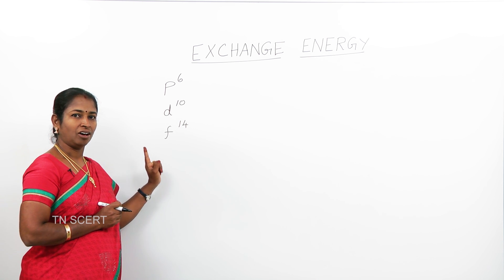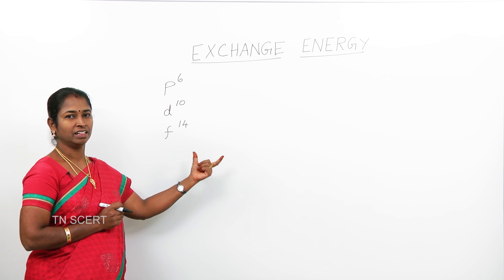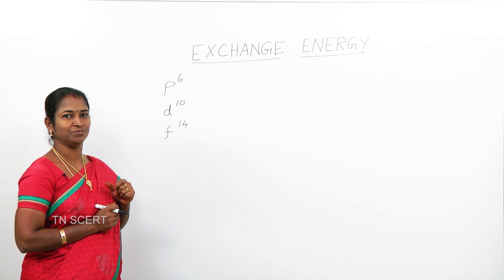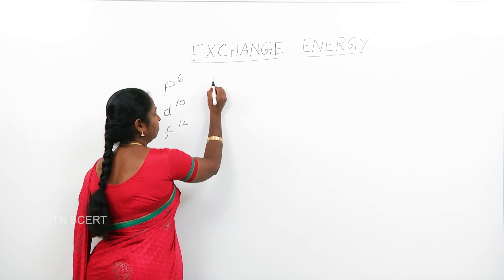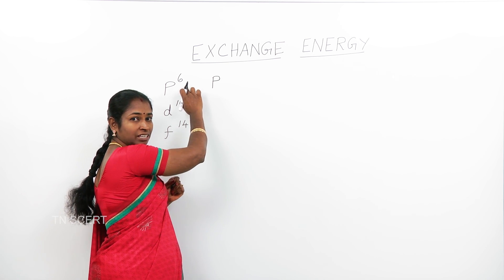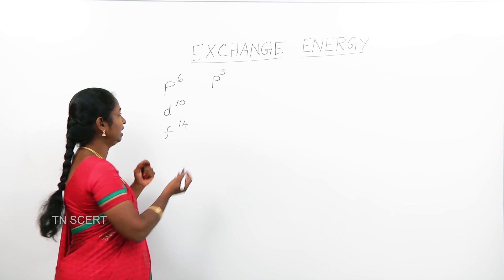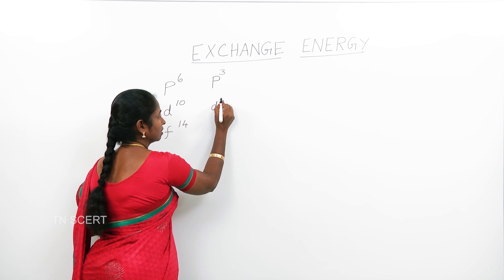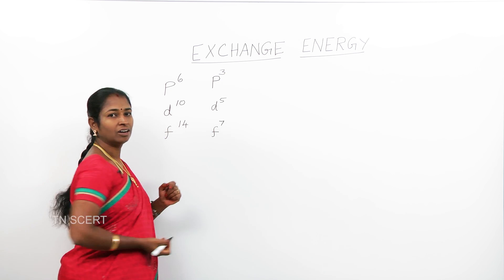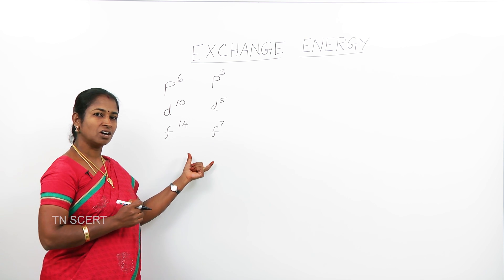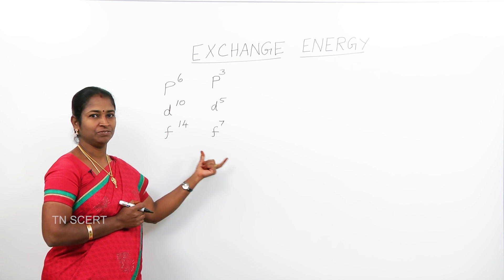You know that if a p orbital, d orbital, or f orbital is exactly half filled, it is more stable than partially filled orbitals. The half-filled configuration of p orbital is p3. Similarly, for d orbitals it is d5, and for f orbital it is f7. These half-filled orbitals are more stable than partially filled orbitals.